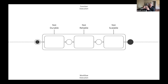Let's contrast that with a workflow execution. What is a workflow execution? A workflow execution is a function execution, but with stronger execution guarantees. A workflow execution is durable, it is reliable, and it is scalable. It doesn't have an inherent time limit. It is inherently oblivious to failure and inherently oblivious to load.